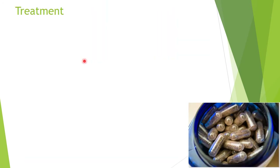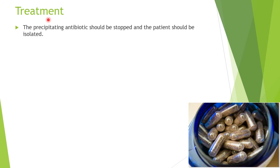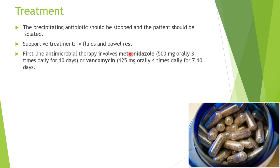For treatment, the precipitating antibiotics should be stopped and the patient should be isolated. Supportive treatment includes IV fluids and bowel rest. First-line antimicrobial therapy involves metronidazole 500 mg orally three times daily for 10 days, or vancomycin 125 mg orally four times daily for 7 to 10 days. Due to the high risk of causing microbial resistance, vancomycin is only used in severe cases.